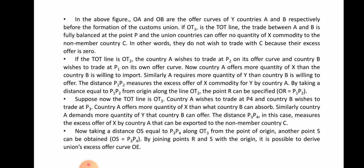If the terms of trade line is OT2, country A wishes to trade at P2 on its offer curve, and country B wishes to trade at P1 on its offer curve. Country A offers more quantity of X than country B is willing to import, and A requires more quantity of Y than country B is willing to offer. The distance P1P2 depicted in the diagram measures the excess offer of commodity X for Y by country A. By taking a distance equal to P1P2 from the origin along line OT2, the point R can be specified, that is, OR equals P1P2.